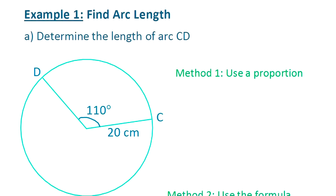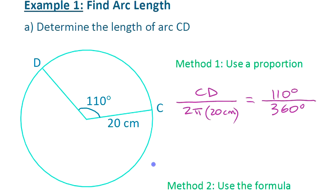I'm going to find the length of that arc. Method 1, use a proportion. So we'll set up the proportion again. The length of the arc divided by 2π times 20 centimeters—that's got to be the same as 110 degrees out of 360 degrees. Since this angle's in degrees, if I'm using a proportion, I can just write this side both in degrees, as long as they're both in the same measurement. If I'm going to solve that, I get CD equals 110 times 2π times 20 divided by 360.